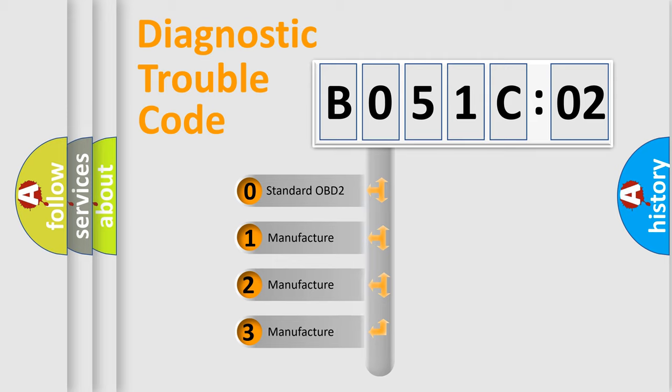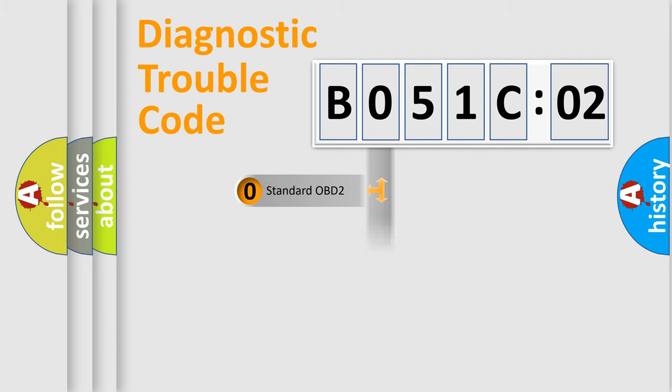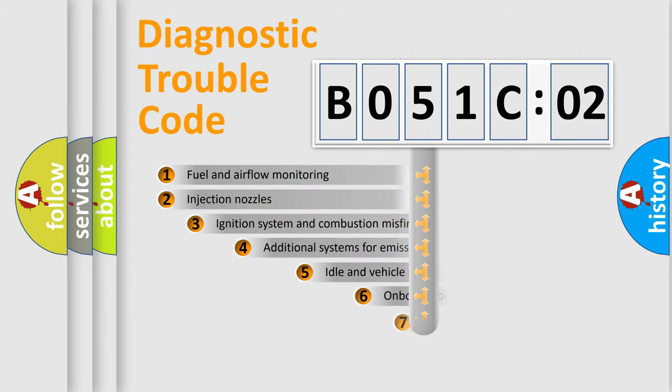If the second character is expressed as zero, it is a standardized error. In the case of numbers 1, 2, or 3, it is a more prestigious expression of the car-specific error.